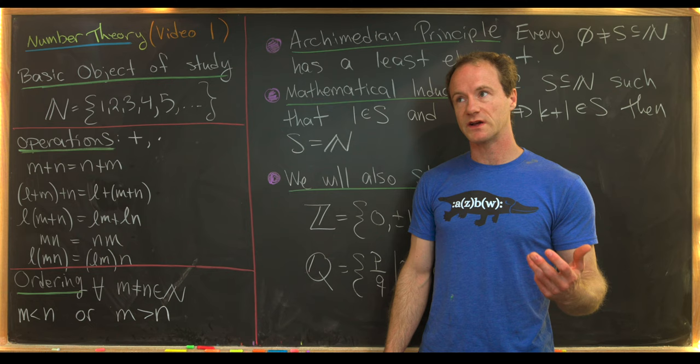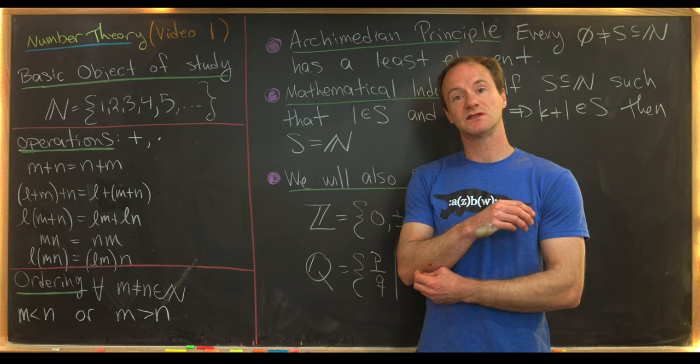For example, the set of subsets of a set is partially ordered. Sometimes you can compare them via inclusion, but sometimes you can't.